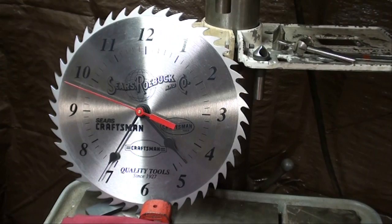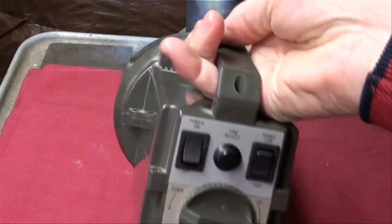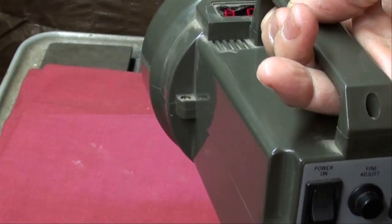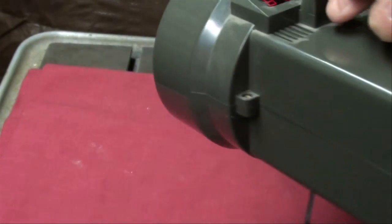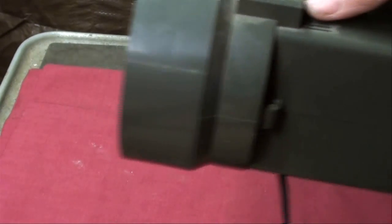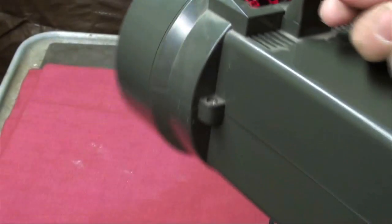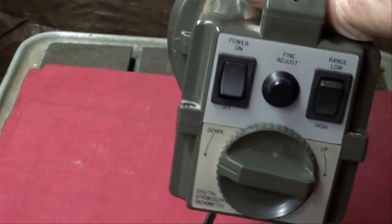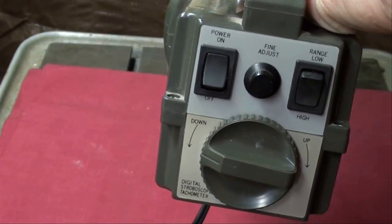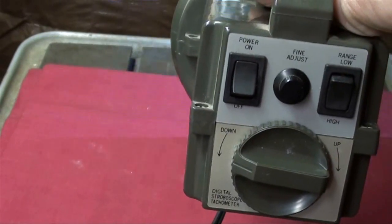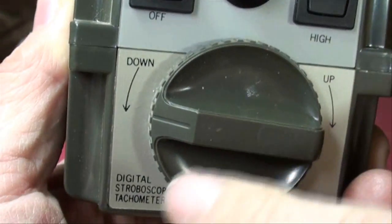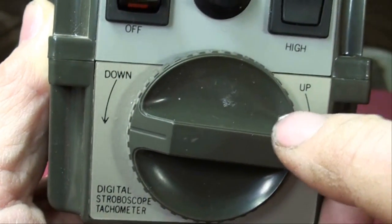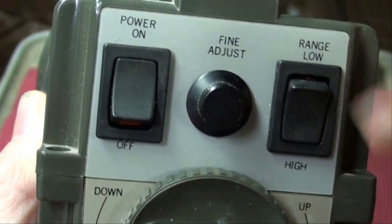The stroboscope is nothing more than a strobe that we can adjust the frequency on. It was Harold Edgerton from Nebraska who invented the strobe back in the late 30s or early 40s, and he pioneered high speed photography. On the backside of the stroboscope we have an on and off switch, high low range, and then this big knob changes the frequency of the light, and here's a fine adjustment for it.